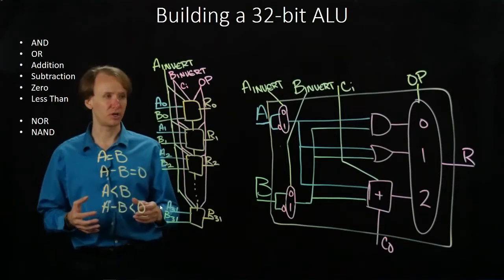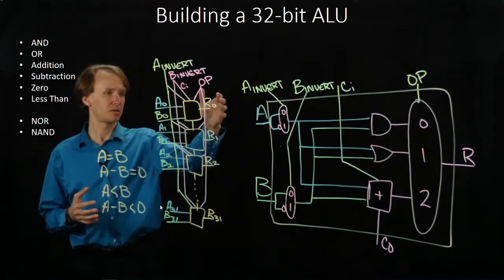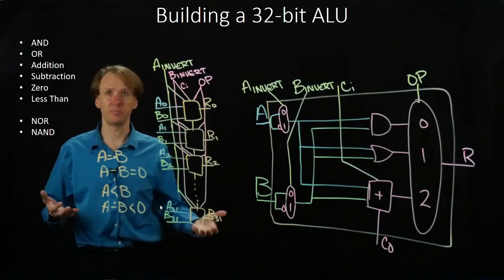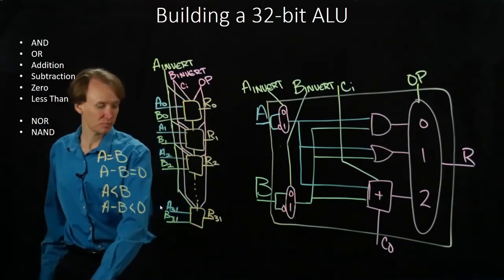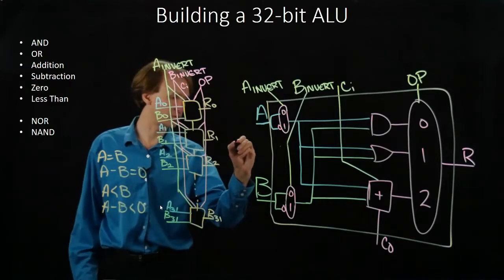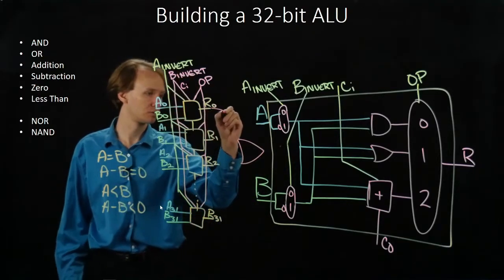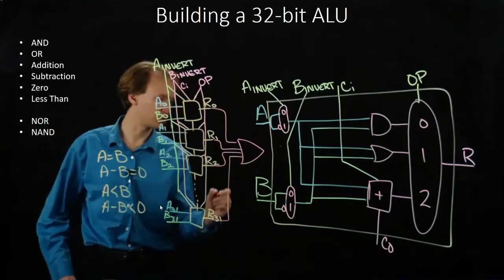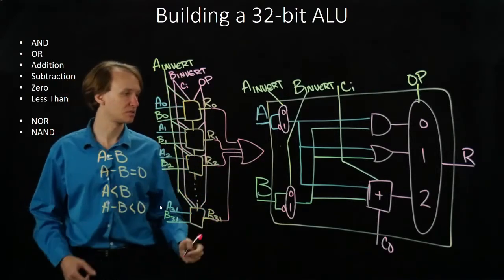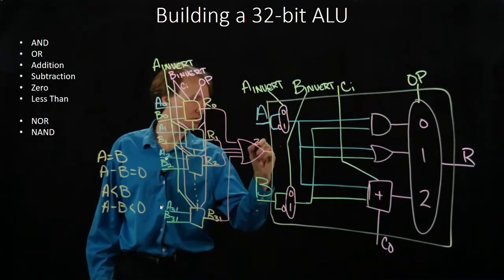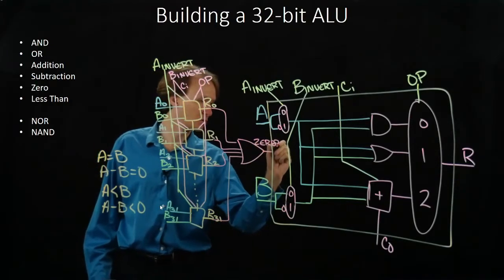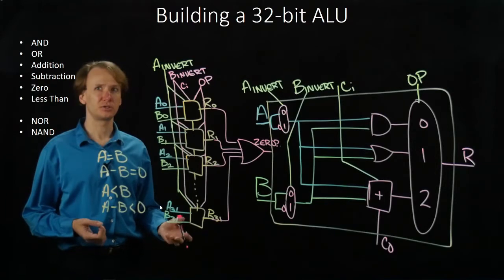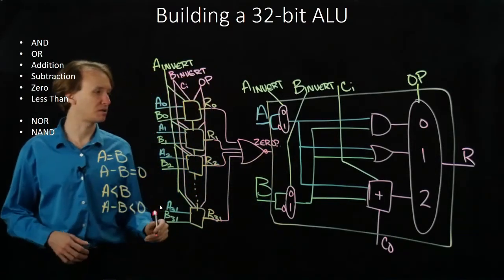We'll start with the zero operation, because that one's really easy to look at. If the results of our ALU are zero, then that means that all of the bits in our result were zero. So what we could do is we could just build one very big OR gate, type all 32 of our result bits into this, and we'd have a result. So this OR gate will tell us if any one of our bits is one, which is almost what we want.